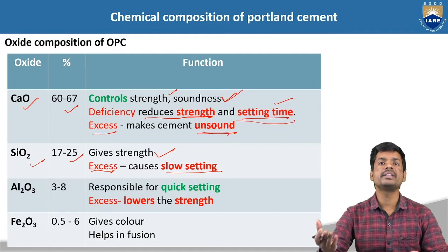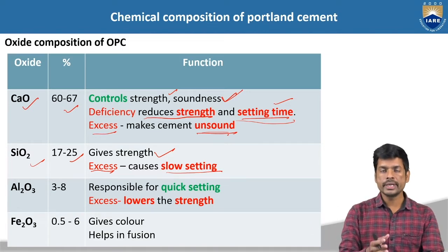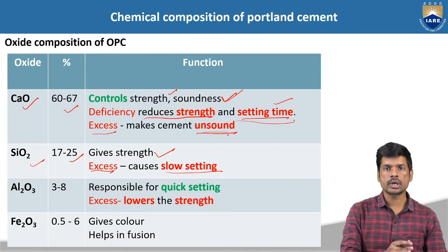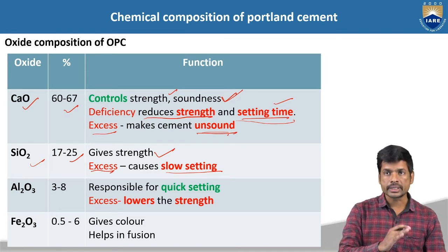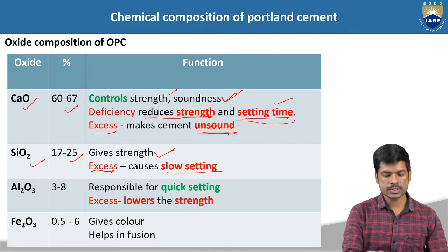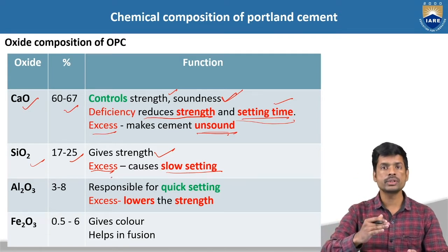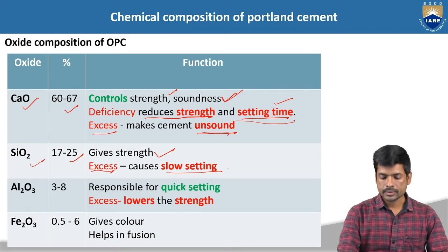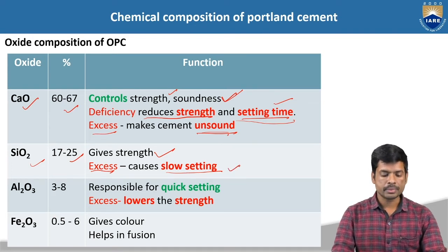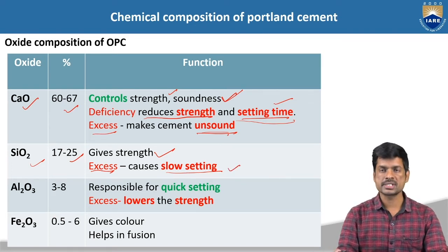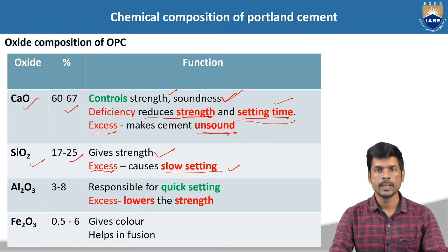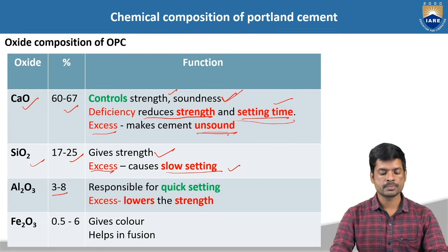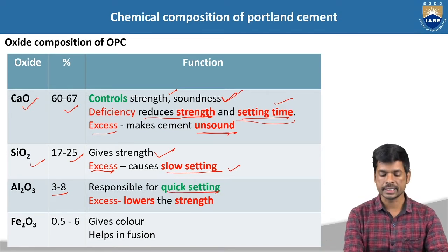Slow setting means after adding the water, the cement is going to change state from the plastic and elastic state to complete hardened state. Next, aluminum trioxide, Al2O3 — the percentage of this particular chemical is 3 to 8%. We have to maintain this particular percentage, and it is responsible for quick setting.